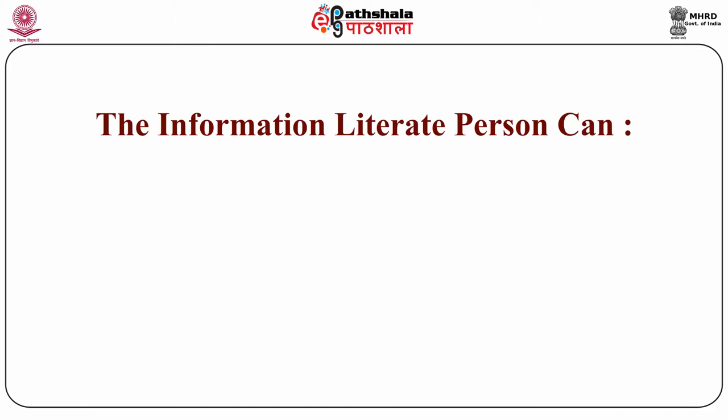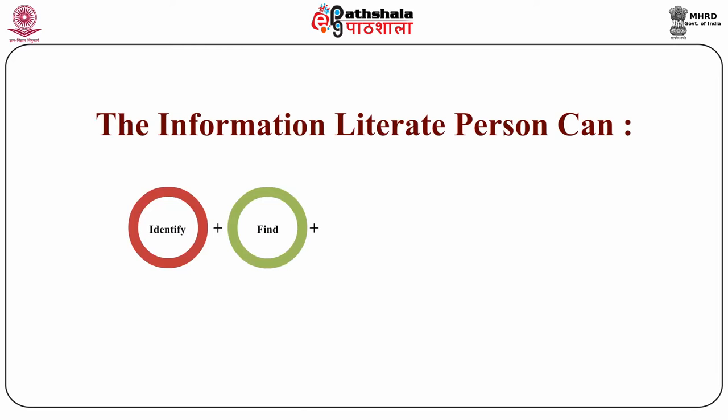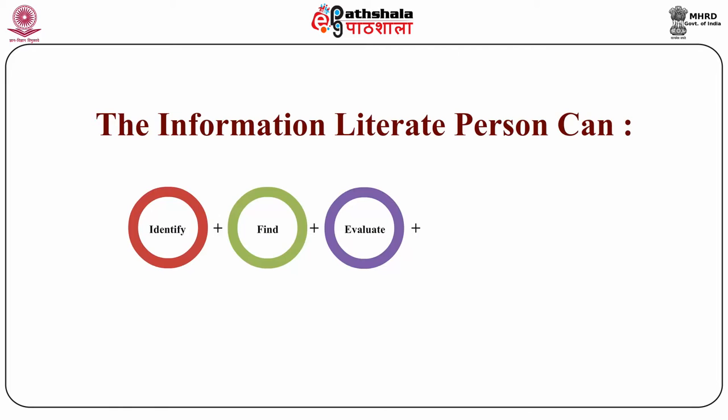The information literate person is able to: first, identify; second, find; third, evaluate; and fourth, apply and acknowledge the information. This is the information literacy cycle, showing all the components: apply, question, source, find, evaluate, combine, and share.